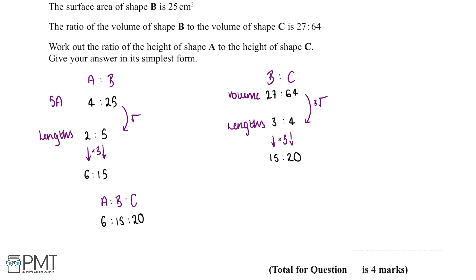This means that if the height of shape A is 6cm, then the height of shape B will be 15cm, and the height of shape C will be 20cm. We want the ratio of the height of shape A to the height of shape C, so we can remove the height of shape B. This tells us that the ratio of heights of A to C is 6 to 20. We need to give our answer in its simplest form, so we divide this ratio by 2, giving us a final ratio of 3 to 10.